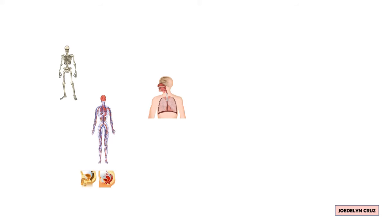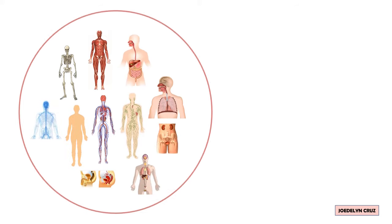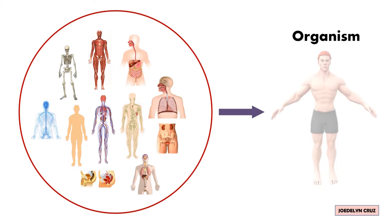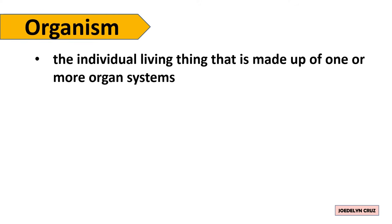When all organ systems perform their function together, organism like human lives and survives. Organism is the individual living thing that is made up of one or more organ systems. The examples of organisms are Human, horse,